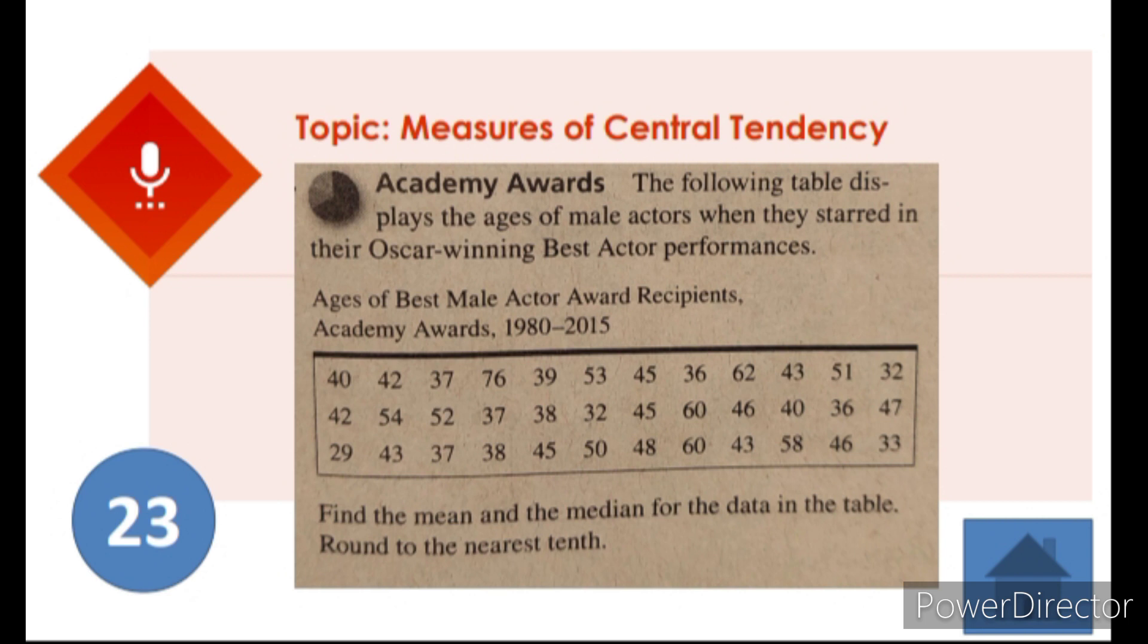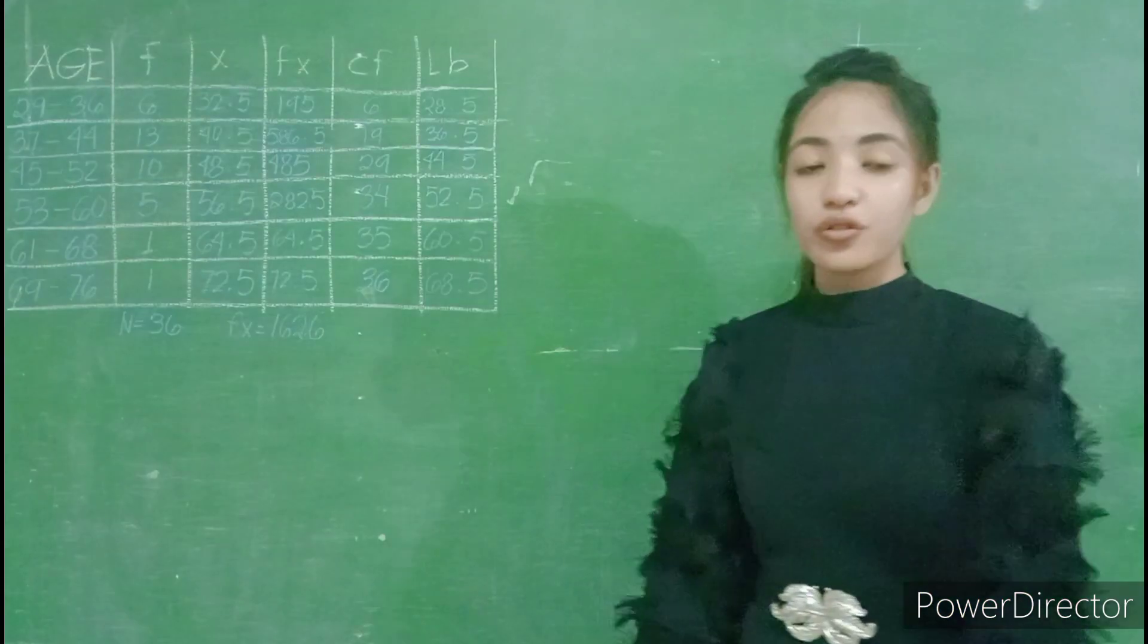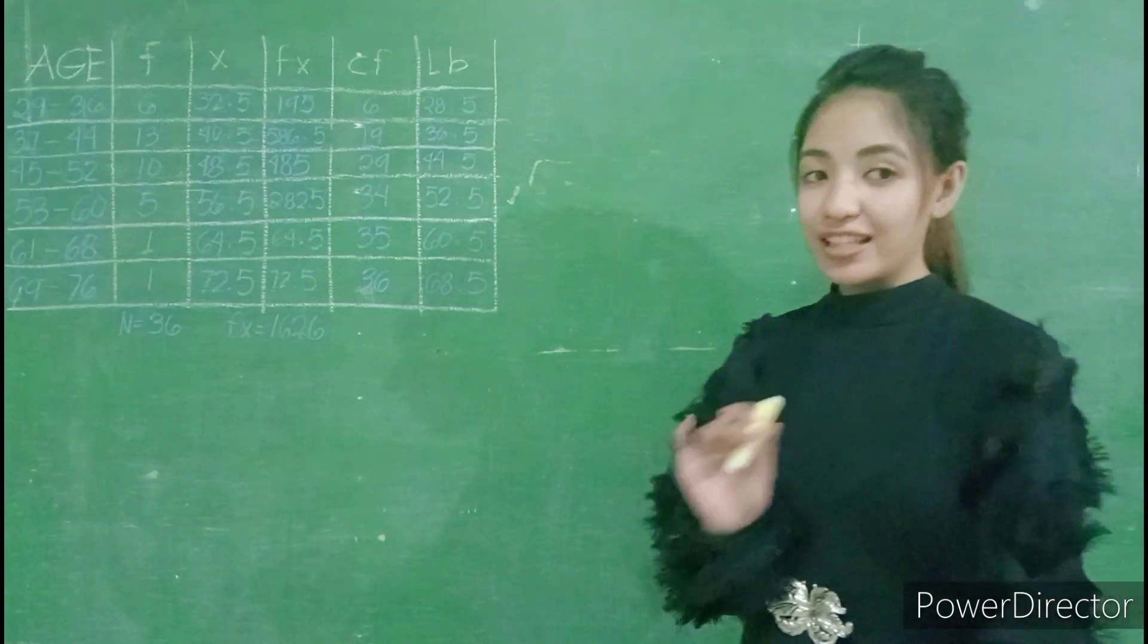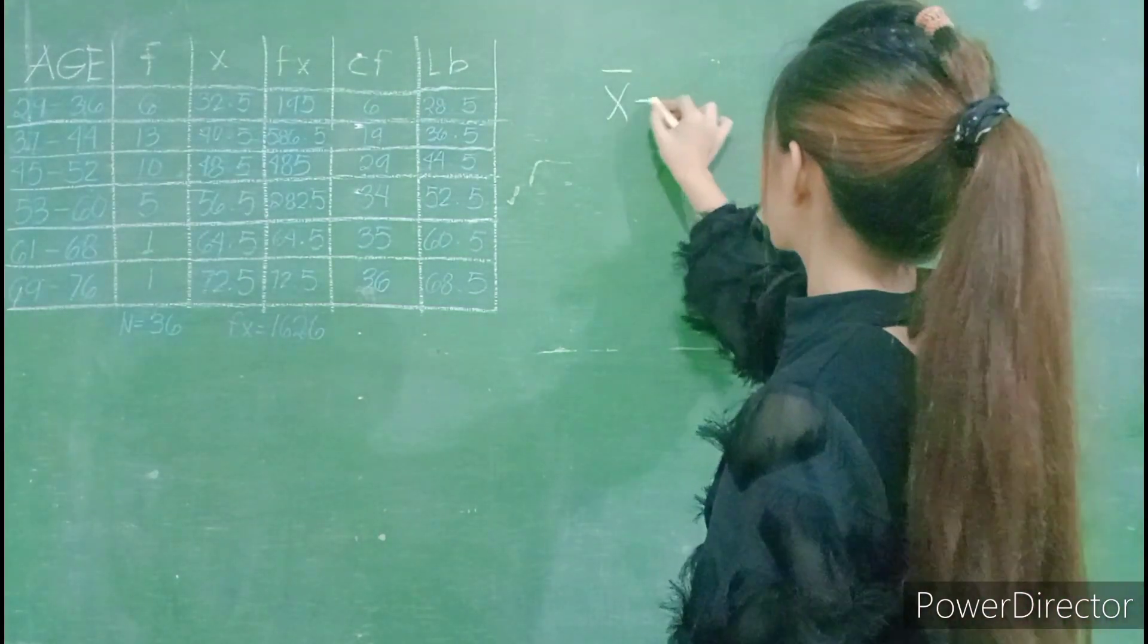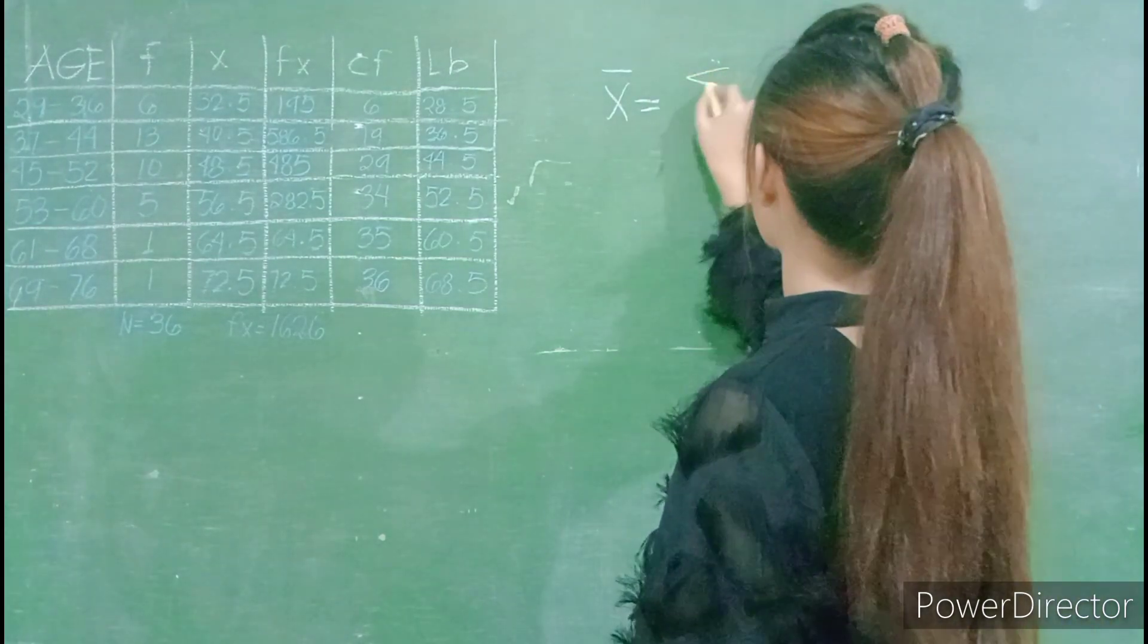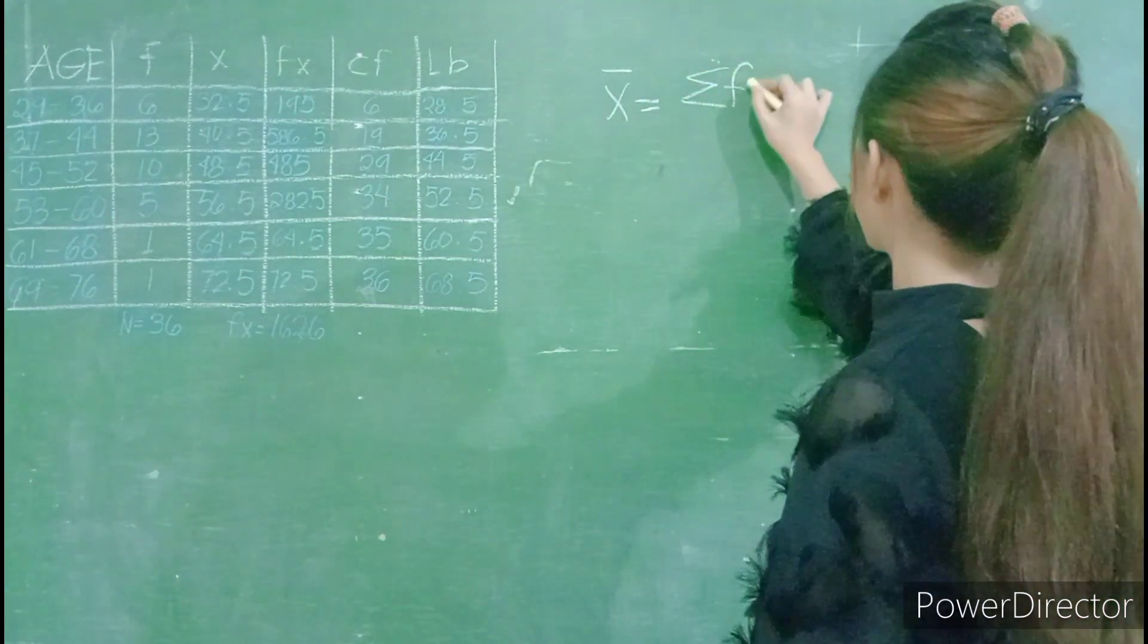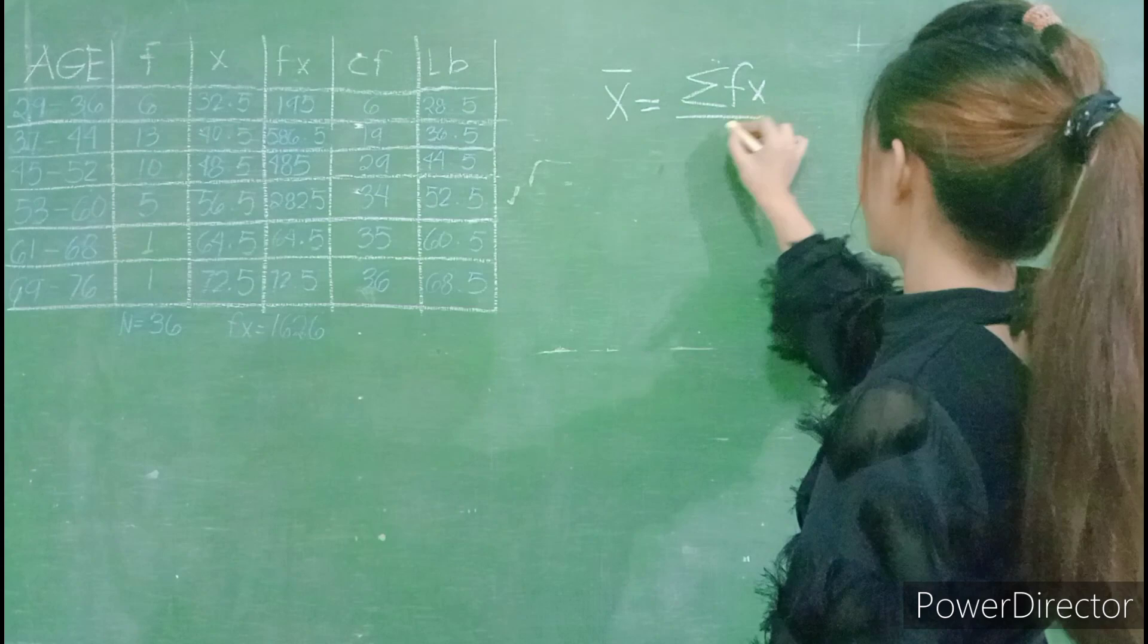In this video, I already finished the frequency distribution table and now let us find our mean and median. To find the value of mean, let us use the formula x-bar equals the summation of fx divided by n.